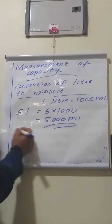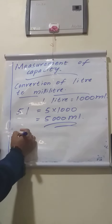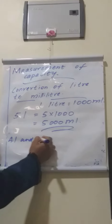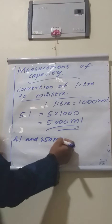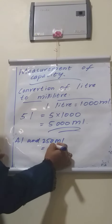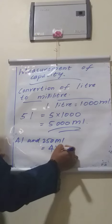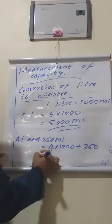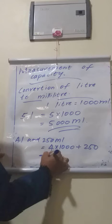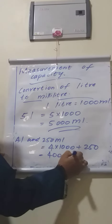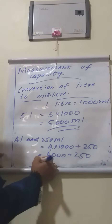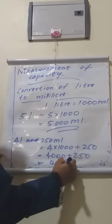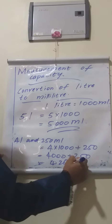Next, 4 liter and 250 milliliter. How we will convert it? 4 into thousand plus 250. 4,000 plus 250. Is equal to 4,250 ml.